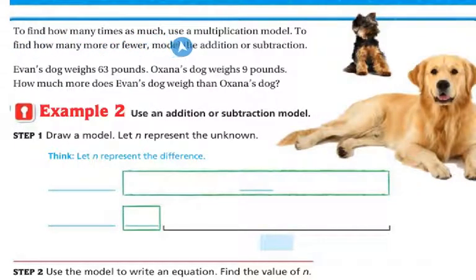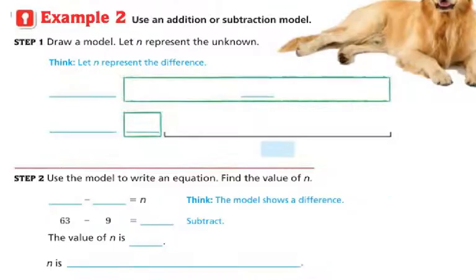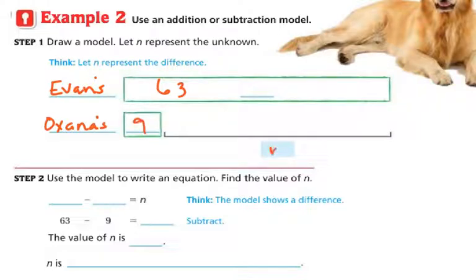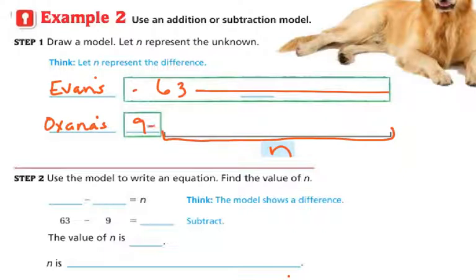To find how many times as much, you can use the multiplication model to find how much more or fewer. Now we model with addition or subtraction. Evan's dog weighs 63 pounds and Onyx's dog weighs nine pounds. How much more does Evan's dog weigh than Onyx's? We draw a model: N represents the difference — the unknown. The whole bar is 63, and this section is nine. We don't know the difference in between.